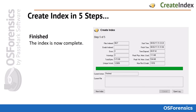You will also be able to see a summary of findings for the index, such as the total size of the index, the number of unique words indexed, the time it took to complete the operation, and more details. If you need to create additional indexes, simply click the new index button at the bottom left corner of the window.